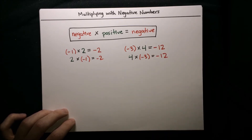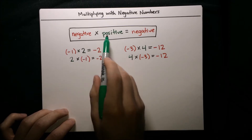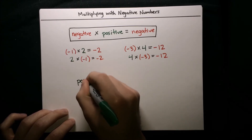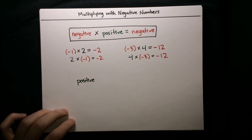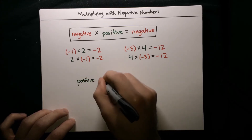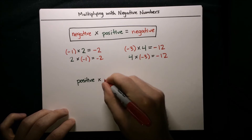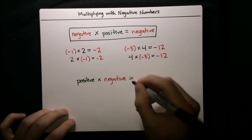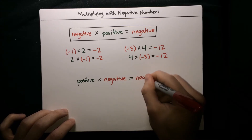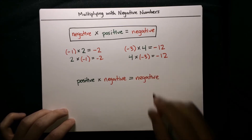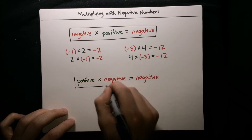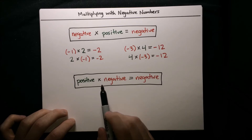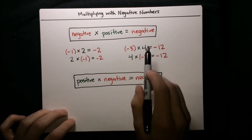That leads us to another rule: we can switch around the negative and the positive and have positive times a negative and we'll still get a negative. So basically, if you're multiplying two numbers and one is positive and the other is negative, the result is always going to be negative.